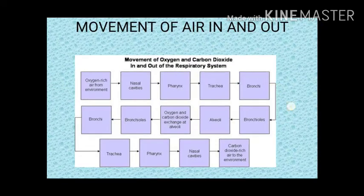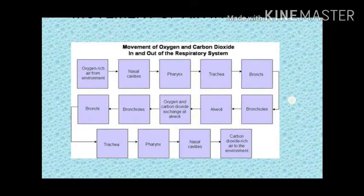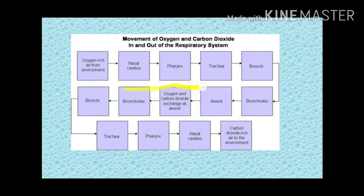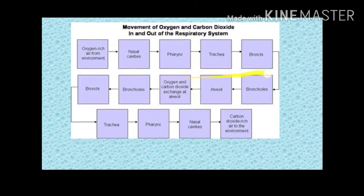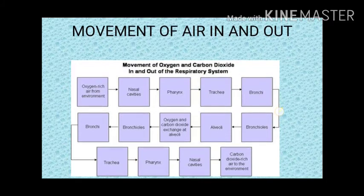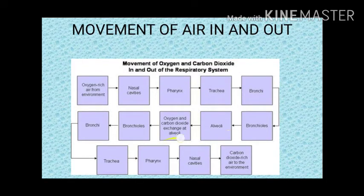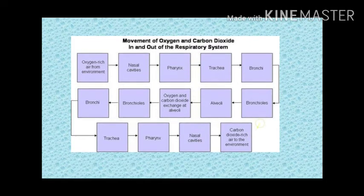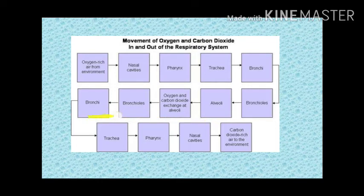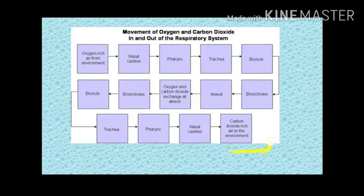This flow chart shows the movement of air. Oxygen-rich air from the environment enters through the nasal cavity into the pharynx, then to the trachea and bronchioles, and finally reaches the alveoli. In the alveoli, oxygen and carbon dioxide are exchanged. Carbon dioxide then moves from the alveoli to the bronchioles, bronchi, trachea, pharynx, nasal cavity, and out of the human body.